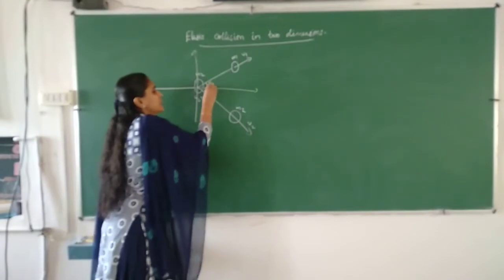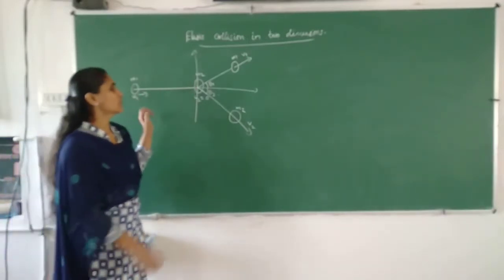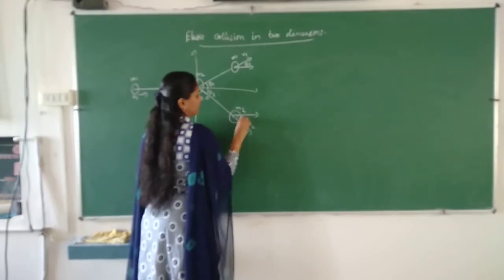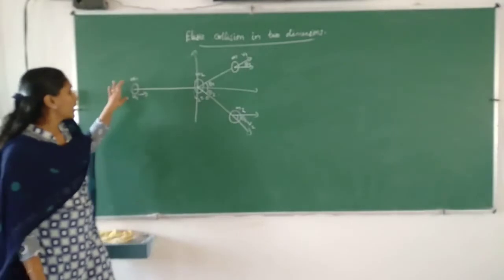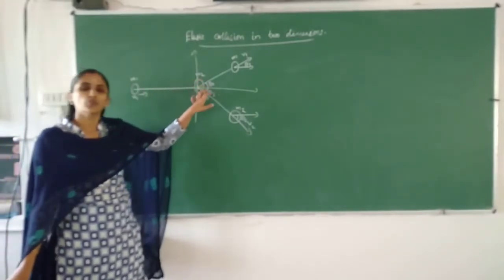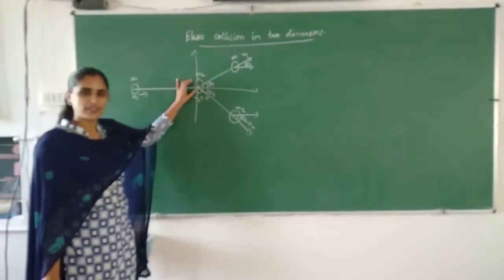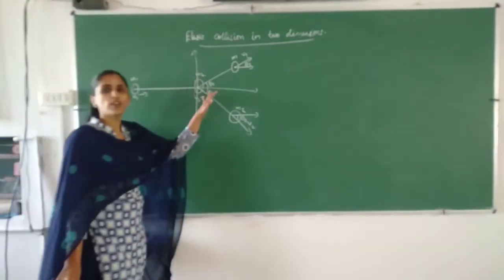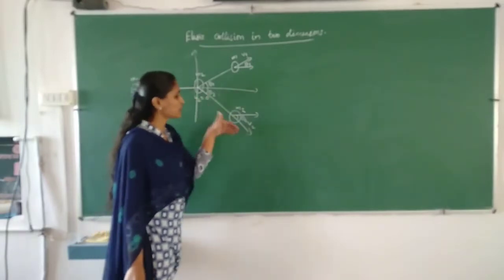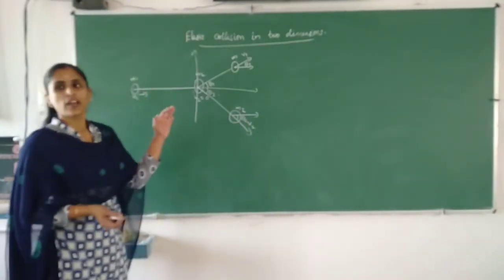Theta1 is the angle made by M1 with the x-axis after collision, and theta2 is the angle made by M2 with the x-axis after collision. Initially object M1 is coming with velocity U1 and colliding with M2. After collision, each object moves in a direction such that its velocity makes an angle with the x-axis — theta1 for M1 and theta2 for M2.